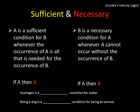Conditionals capture the relationship between necessary and sufficient conditions. Patrick Hurley defines these: A is a sufficient condition for B whenever the occurrence of A is all that is needed for the occurrence of B. For example, being a dog is a sufficient condition for being an animal. On the other hand, B is a necessary condition for A whenever A cannot occur without the occurrence of B. Thus, being an animal is a necessary condition for being a dog.